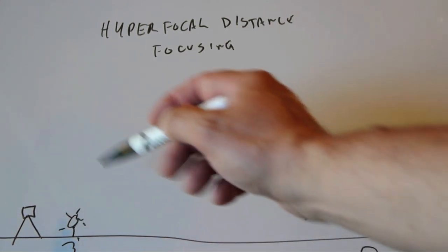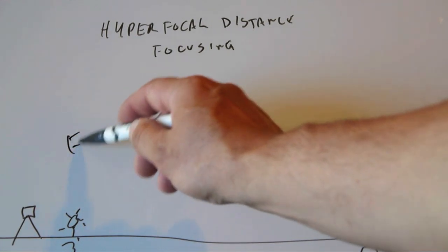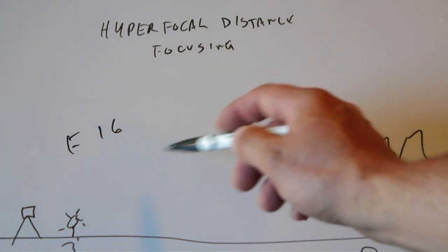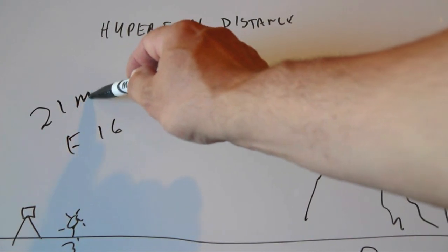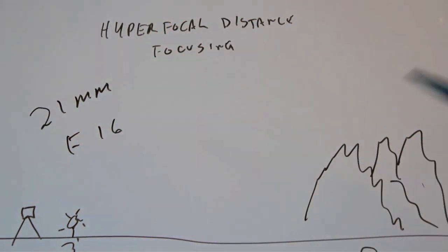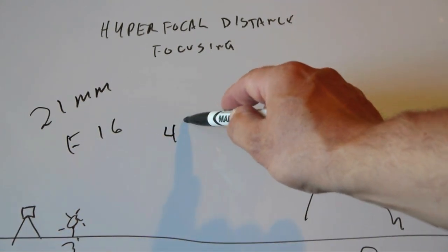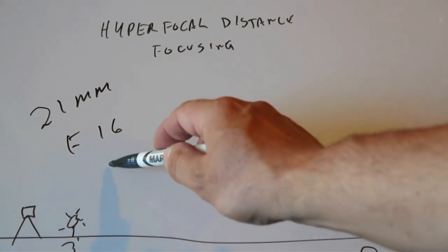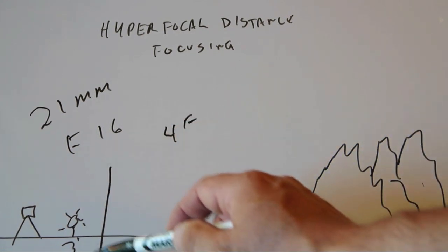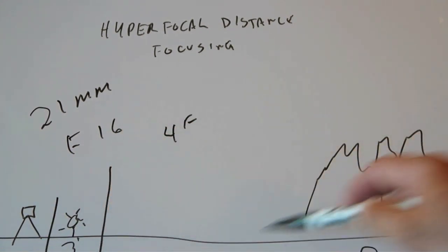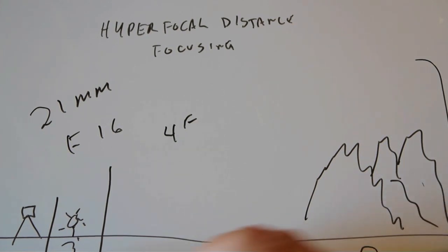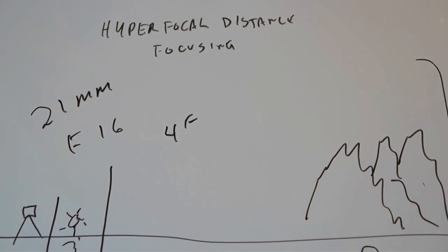And the mountains are at infinity. So if you set your lens to f16, that chart, if you're using a 21 millimeter lens, that chart is telling you on that lens, that if you manually focus at about four feet, so you're focusing there, you're going to get from here to infinity in focus. And that's hyperfocal distance. And that's how it works. And it's just that easy.